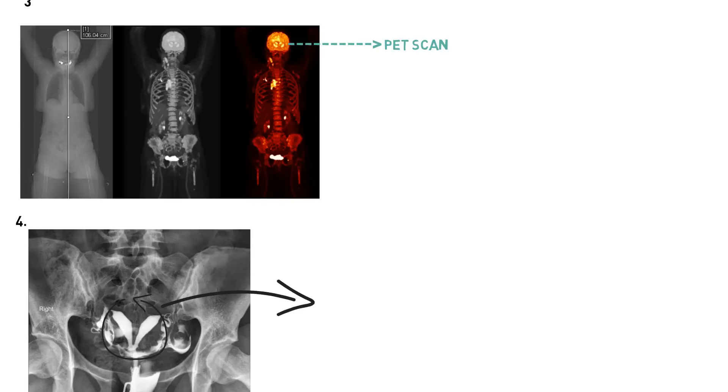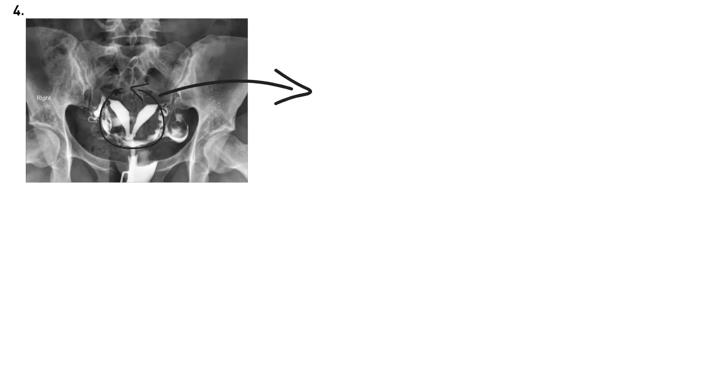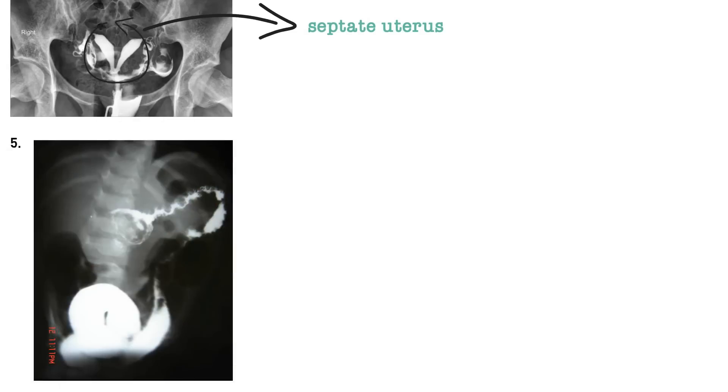The next question: look over here, this is the hysterosalpingography with clinical findings. We have options like unicornuate uterus, bicornuate uterus, septate uterus, and uterus didelphys. I think my answer is septate uterus. There is confusion between septate uterus and bicornuate uterus, but I can stay with septate uterus.